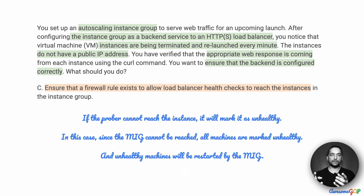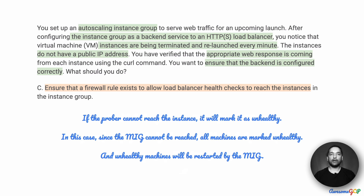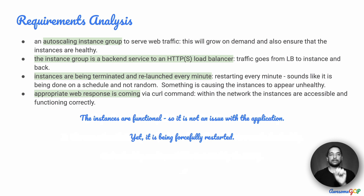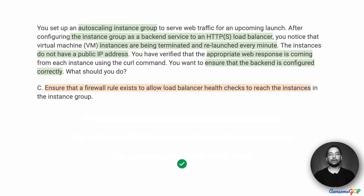Since the entire managed instance group is blocked by the firewall rule that should have been open between the probers and the instances, all machines are going to be marked unhealthy every time they come up. They come up, the prober sends a request, it's not able to reach it, marks it unhealthy, and the managed instance group terminates and restarts it. That behavior matches exactly what we are witnessing in this scenario. Therefore, option C is the correct answer to this question.